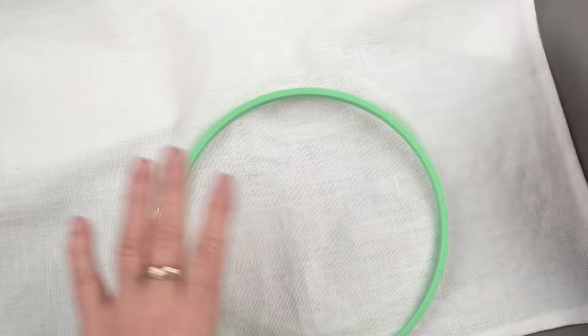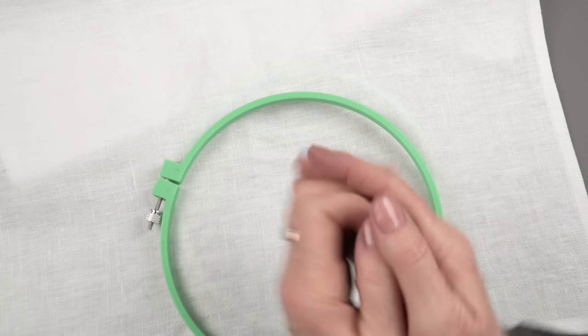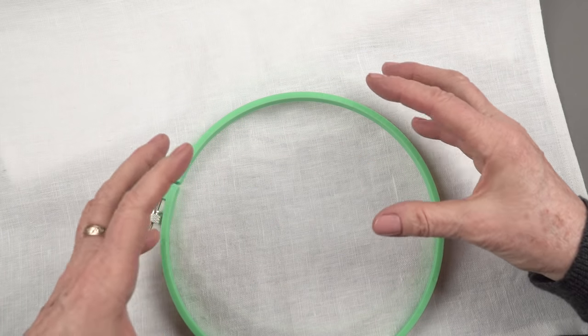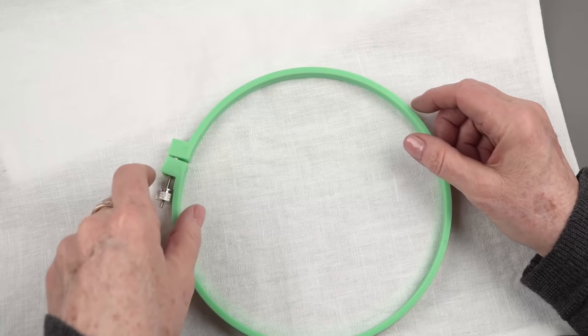You have to have a hoop if you want the fabric to remain taut and so it doesn't all bunch up and make a mess.